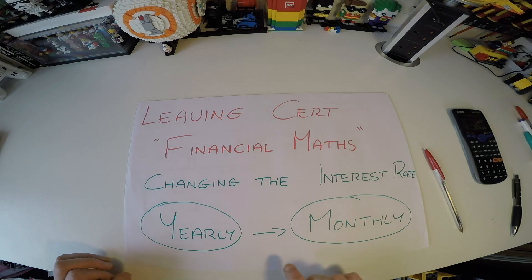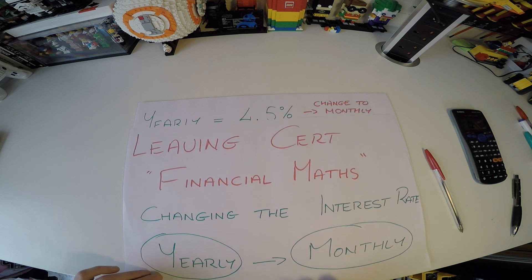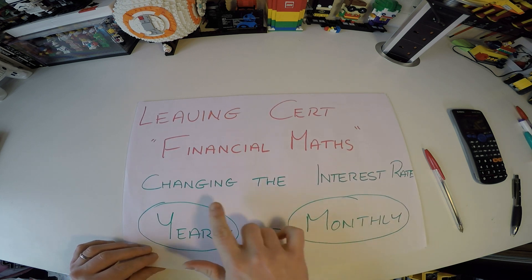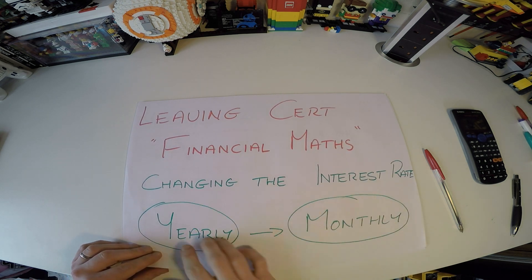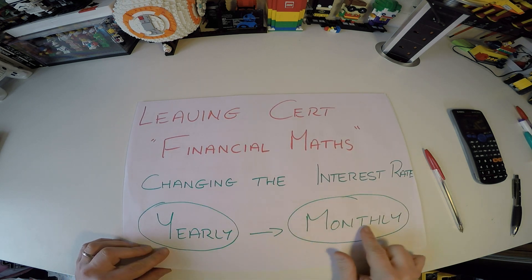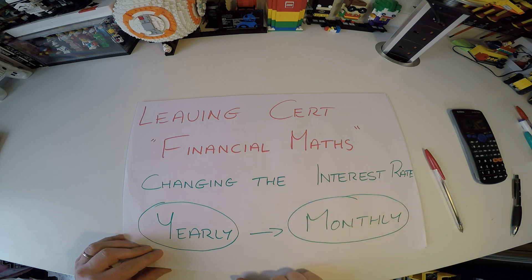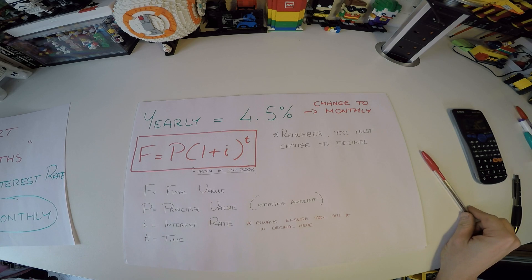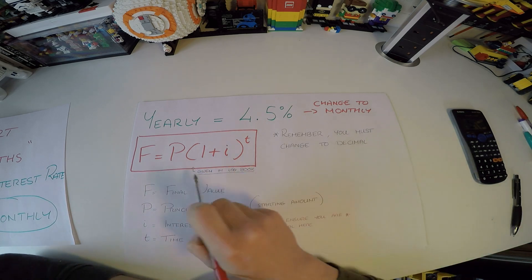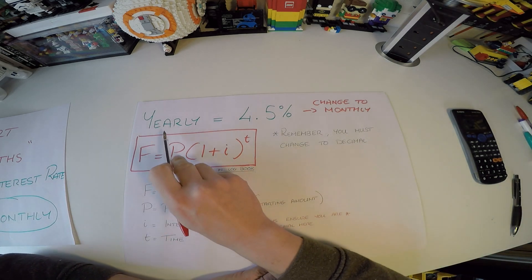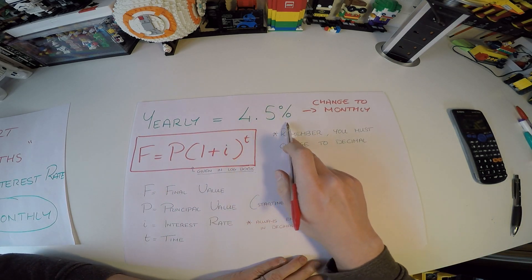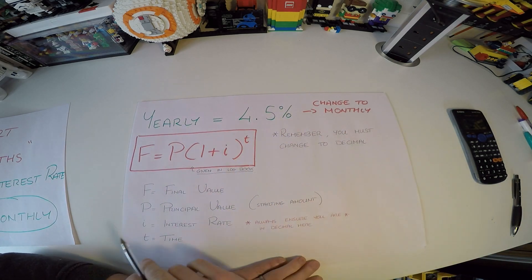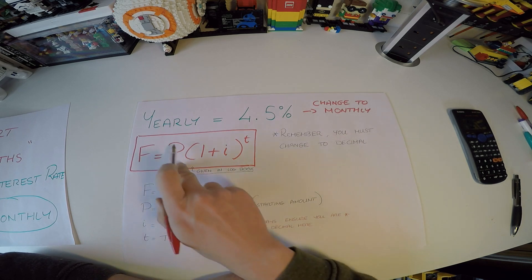This is just a quick video on how to change an interest rate in financial maths from yearly to monthly. This comes up a lot in the exam and is something you should know very quickly. We're going to take an example of changing the yearly rate of 4.5 percent to monthly.